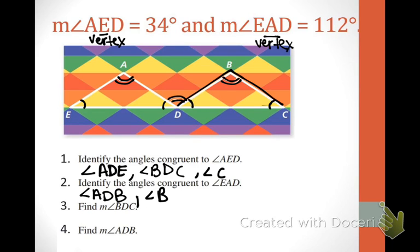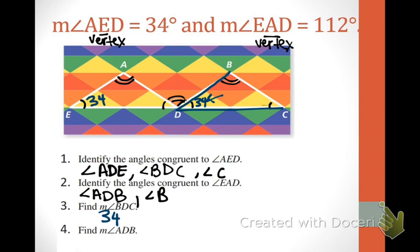This little M means measure, so your answer will be a number. We're finding the measure of angle BDC. The vertex is D, it has one arc, so that angle is 34 degrees. And the measure of angle ADB — it's the middle one with two arcs, so the measure of ADB is 112 degrees.